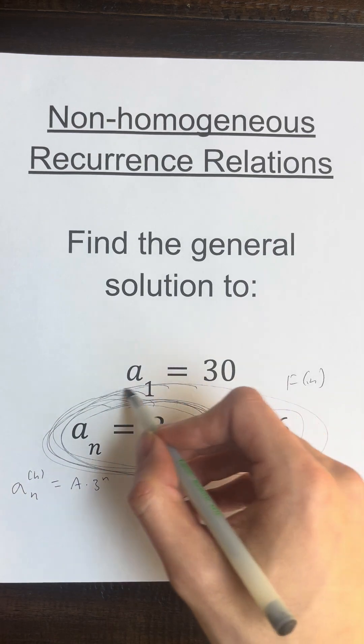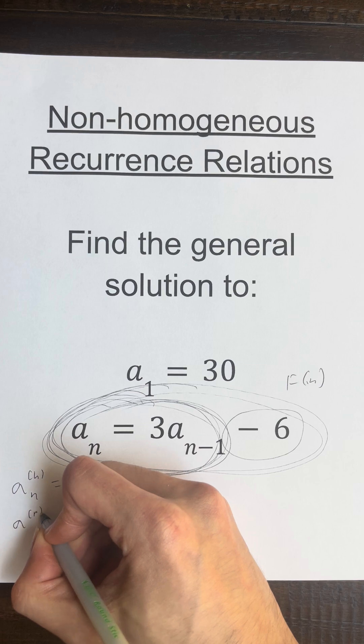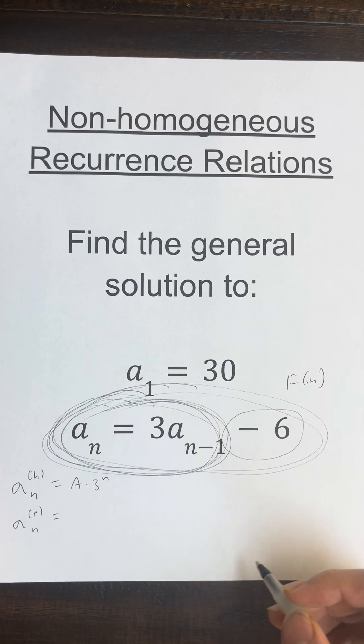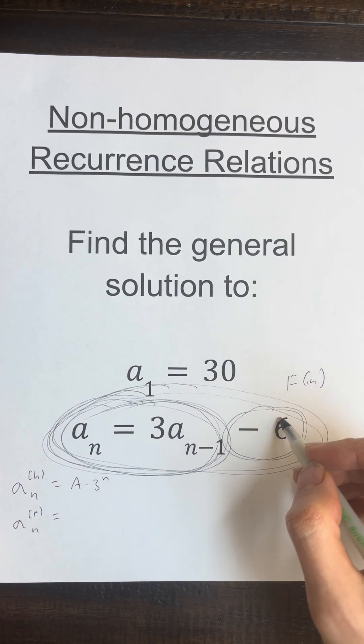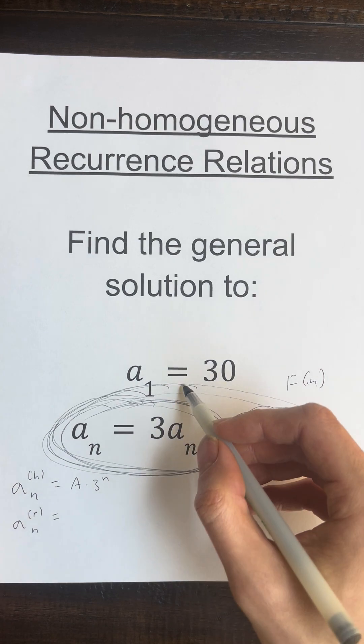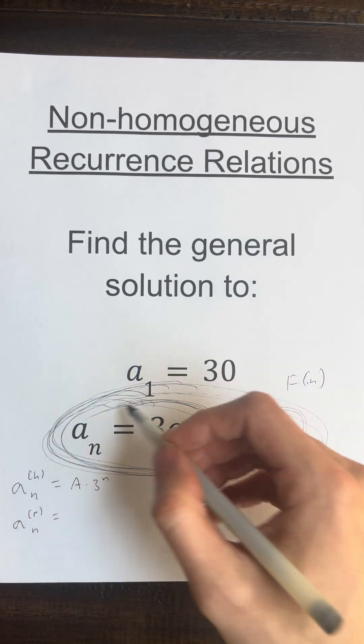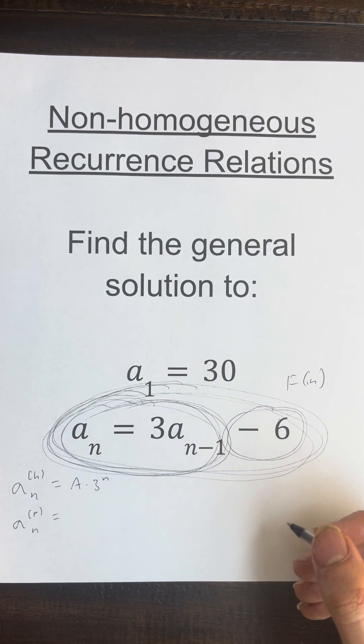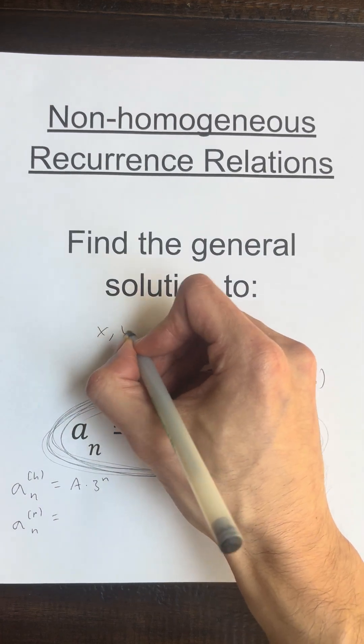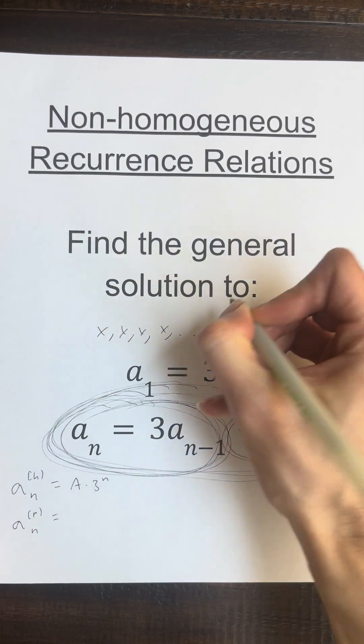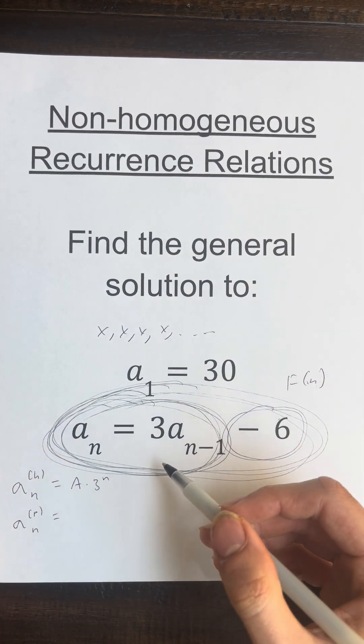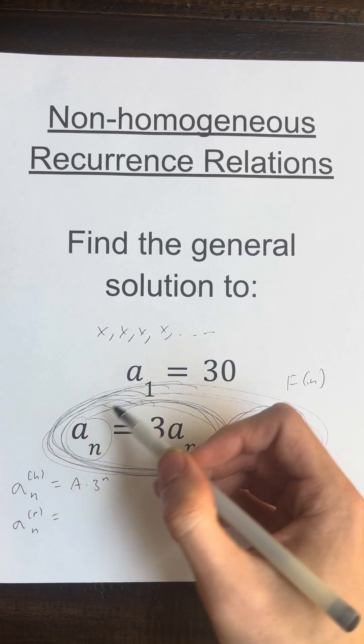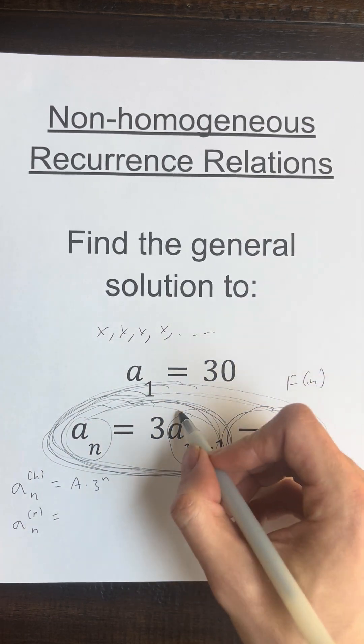Now we need to find a sequence that satisfies this, and that's what we call a particular solution. Since f of n is a constant, I'm going to guess that our particular solution is also constant. So it's just going to be the same number repeating over and over. So that would mean that this is going to be x, and this is also going to be x.